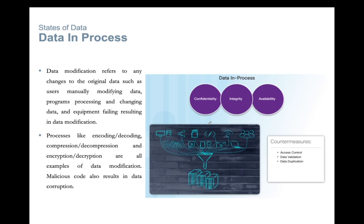These are the states of your data — data at rest, data in transit, and data in process — representing the second dimension of the cybersecurity cube. We will stop this session here.